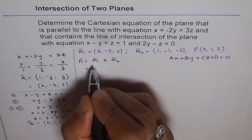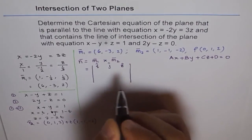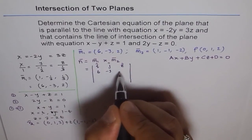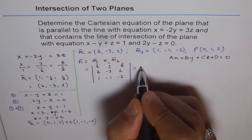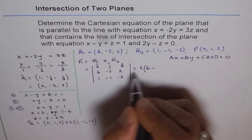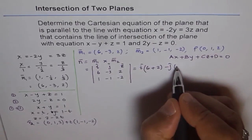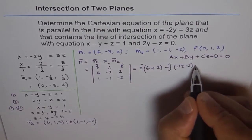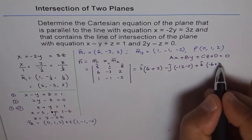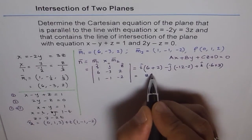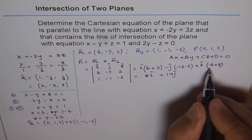Computing m1 cross m2 using the I, J, K matrix with rows (6, -3, 2) and (1, -1, -2): the I component is (-3)(-2) minus (2)(-1) equals 6 plus 2 equals 8. The J component is minus [(6)(-2) minus (2)(1)] equals minus[-12 minus 2] equals 14. The K component is (6)(-1) minus (-3)(1) equals -6 plus 3 equals -3. So m1 cross m2 equals (8, 14, -3).